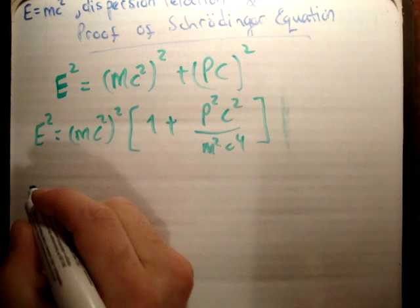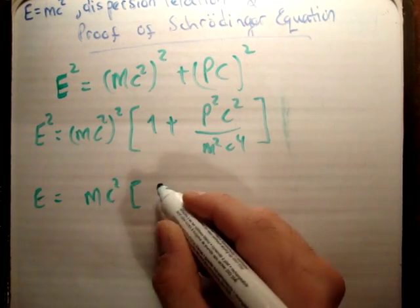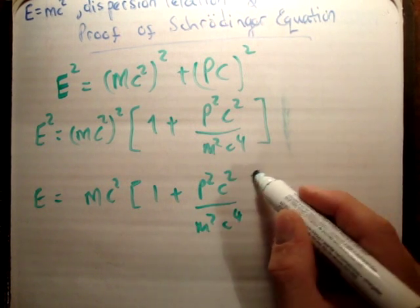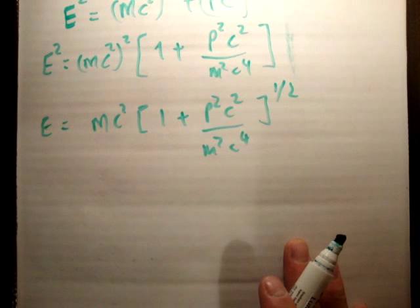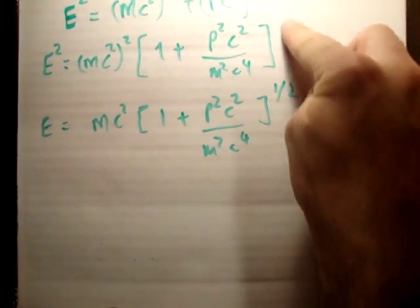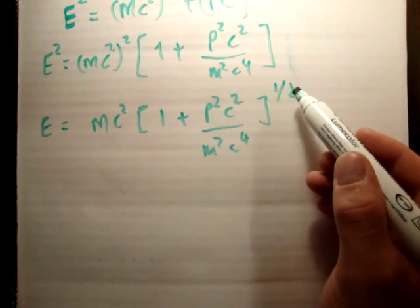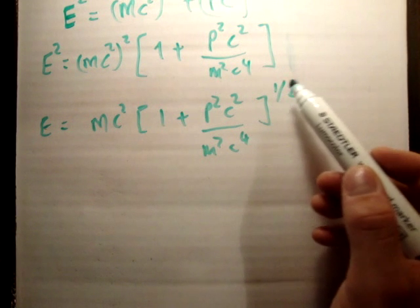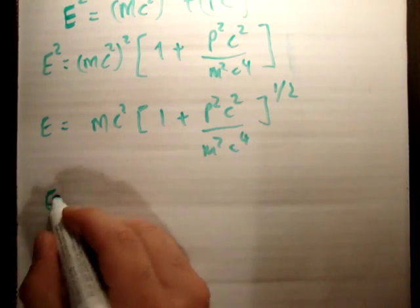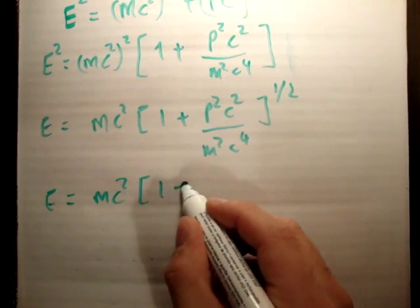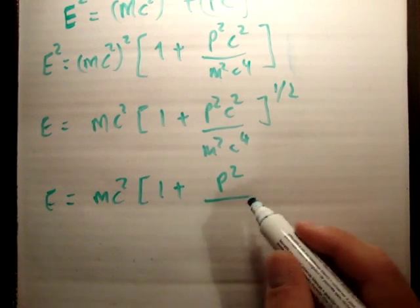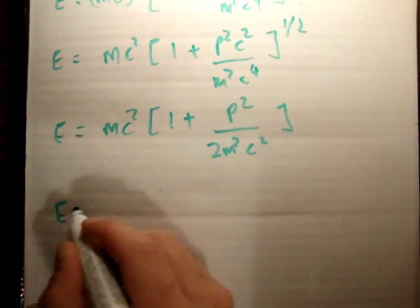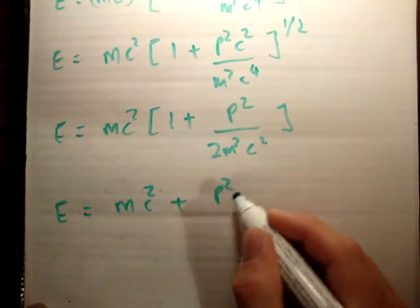If we take the square root of that, we get E equal to mc² times (1 + p²c²/m²c⁴) to the power of one half. Now we need to use a Taylor expansion — because this expression fits the Taylor expansion form, we can bring that half power inside, giving us E equal to mc² times (1 + p²/2m²c²). So refactorizing, E equals mc² plus p²/2m.